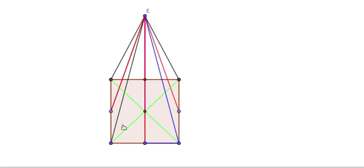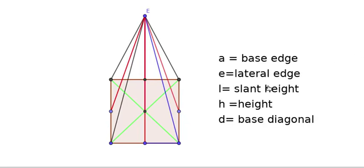These are the base diagonals, denoted by D. And the height of the pyramid H is the distance from the apex vertex to the point of intersection of the base diagonals. So: A represents the base edge, E represents the lateral edge, L is the slant height (height of one lateral face), H is the height of the pyramid, and D represents the base diagonal.